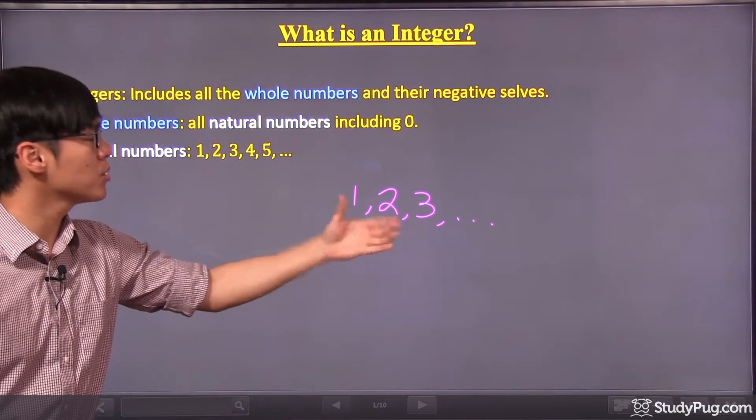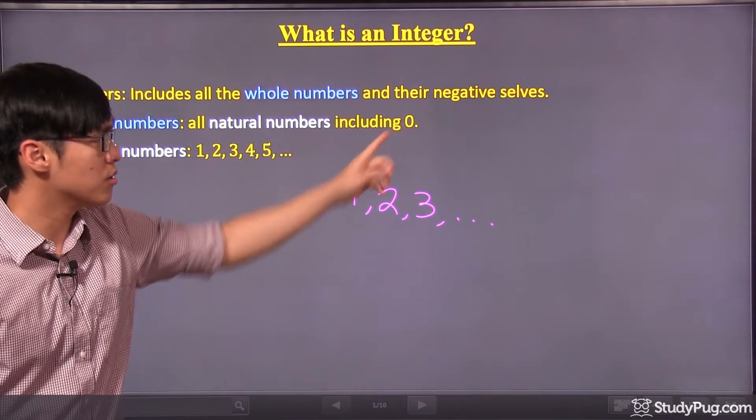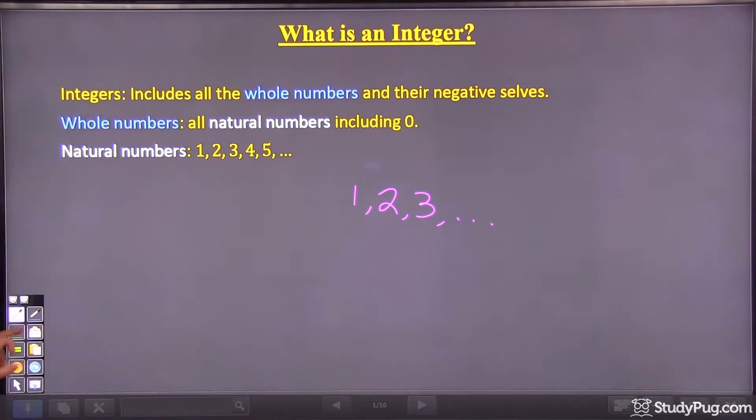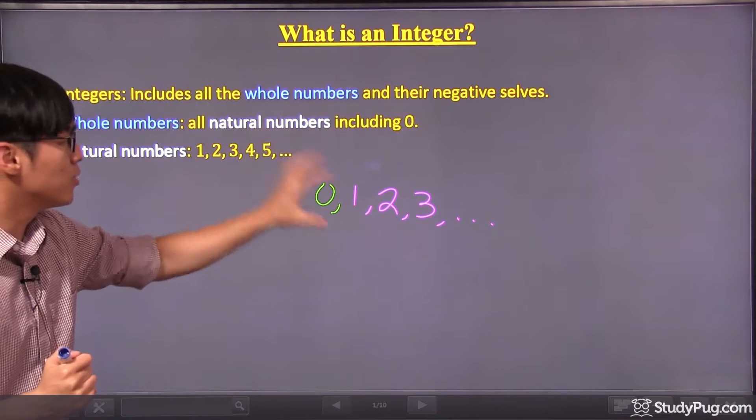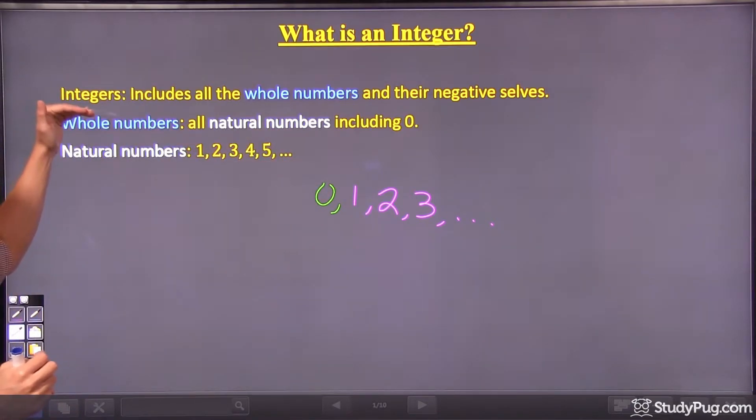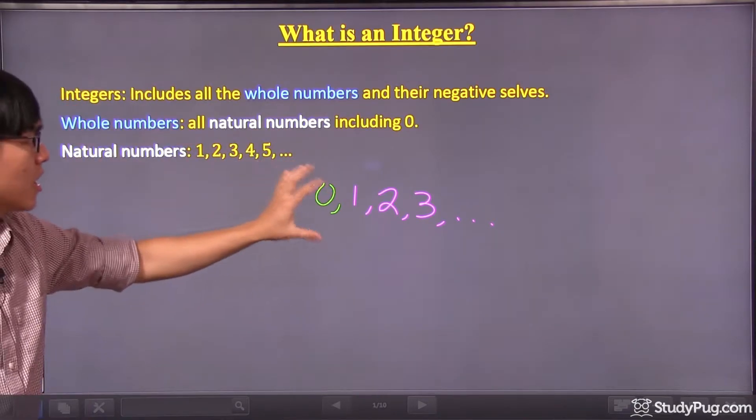So these are our natural numbers and as for whole numbers, it's just all the natural numbers including zero. So apart from these numbers, if we put a zero in it, these will now become the whole numbers.